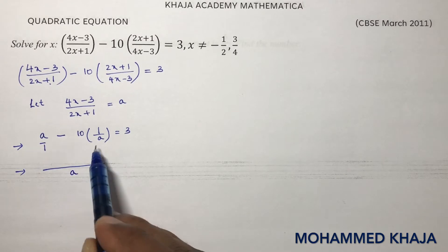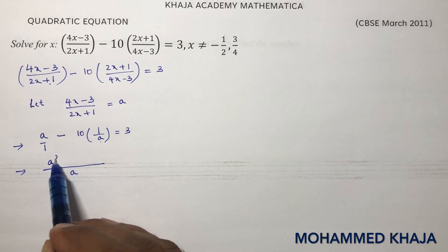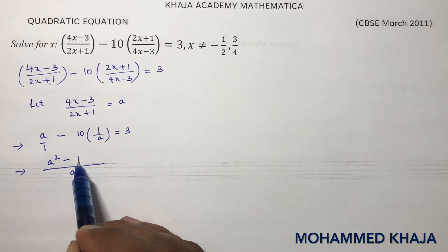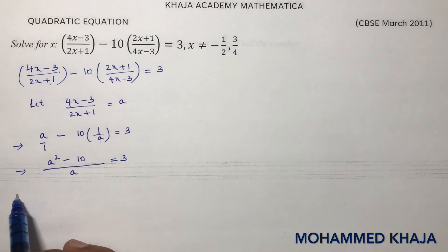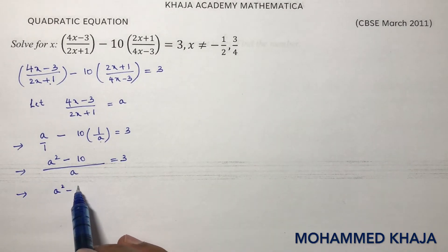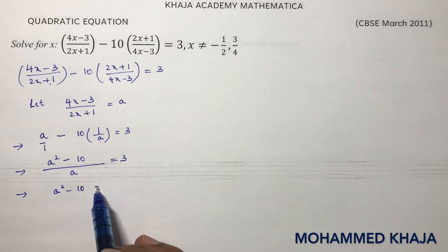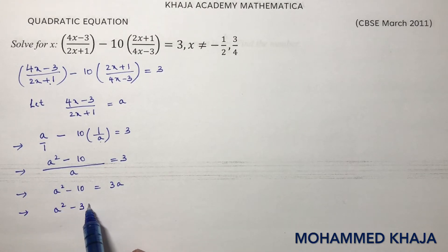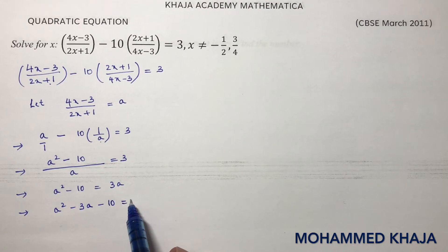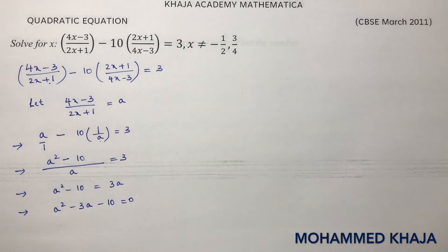Taking LCM, which is a, we get: a squared minus 10 equals 3a. Rearranging: a squared minus 3a minus 10 equals 0.